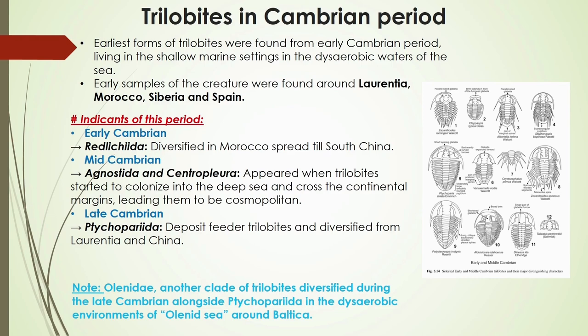Early Cambrian trilobites were found in Laurentia, Morocco, Siberia, and Spain. The Cambrian period is divided into three timelines: early, mid, and late. The early Cambrian saw the diversification of trilobites, namely Redlichiida spreading across Morocco to South China. Agnostida and central pleurites started colonizing deep water, enabling them to diversify all over the world in the mid-Cambrian.